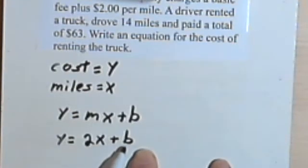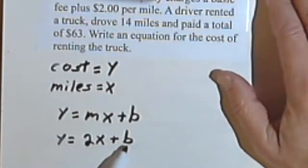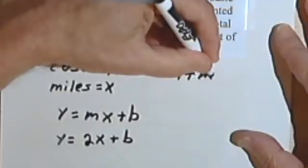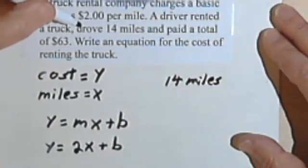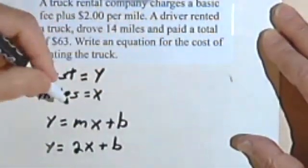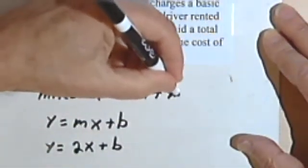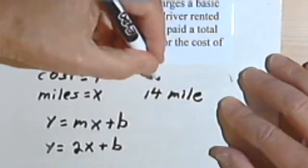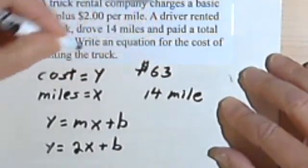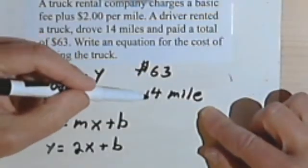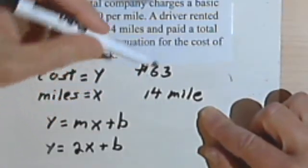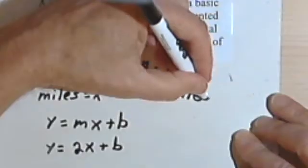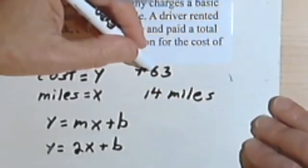Now, we don't have the basic fee, we don't have the B, the y-intercept. But what we have is 14 miles, and 14 miles, actually let's put that 14 miles right over here, 14 miles, and we have the cost. The cost was 63 dollars. So basically, we have a point on the graph, if we want to think of this as a graph. We have the X coordinate, which is 14 miles, and we have the Y coordinate, which is 63. So we have this point. The point would be where this is an X and this is a Y.